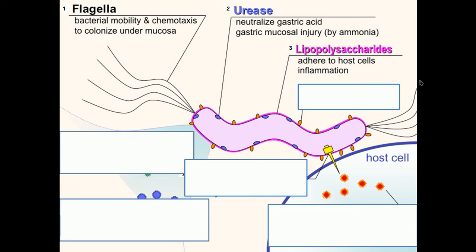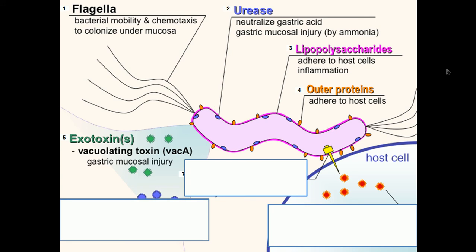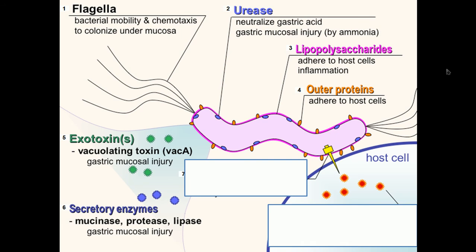The fourth factor is outer membrane proteins — shown here in orange — which are required for the bacteria to adhere to the host cell membrane. The fifth factor is exotoxin; although Helicobacter pylori is not heavily dependent on exotoxins for infectivity, it produces a vacuolating toxin called VacA (vacuolating toxin A). Secretion of this toxin degrades the epithelial cell by forming vacuoles inside the cell. The sixth factor is secretory enzymes like mucinase, protease, and lipase: proteases degrade proteins, lipases degrade lipids, and mucinase degrades the mucus lining.